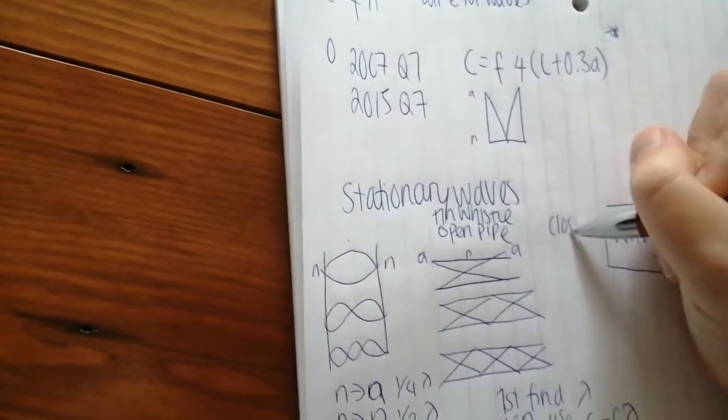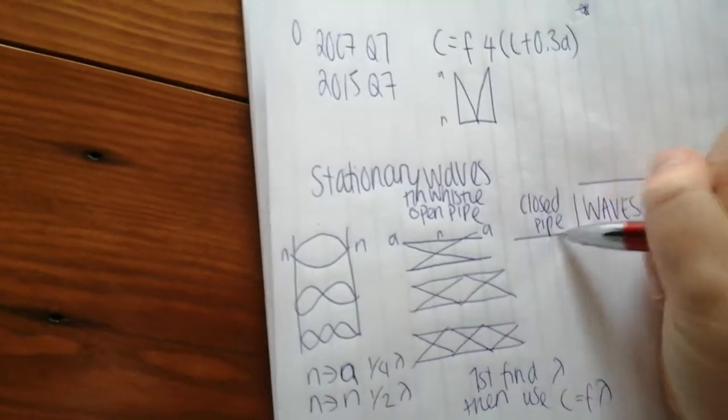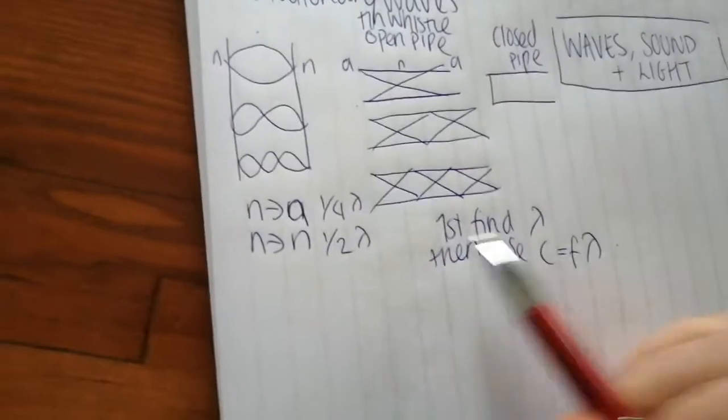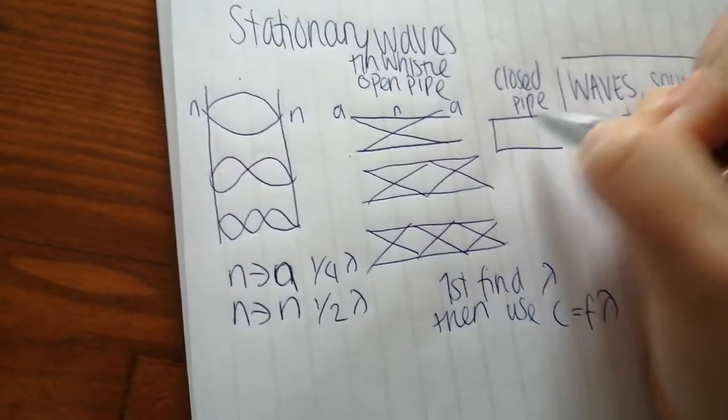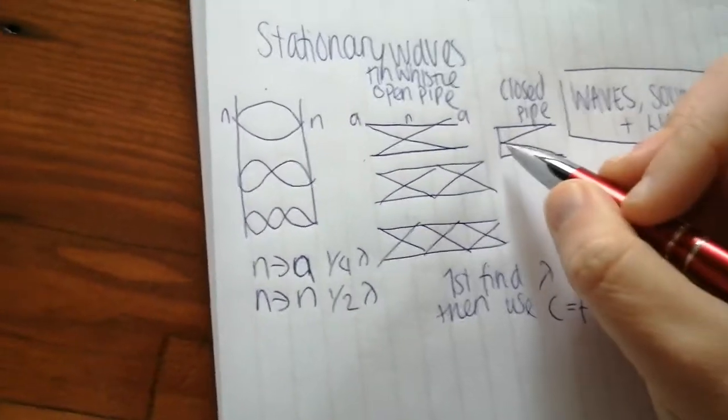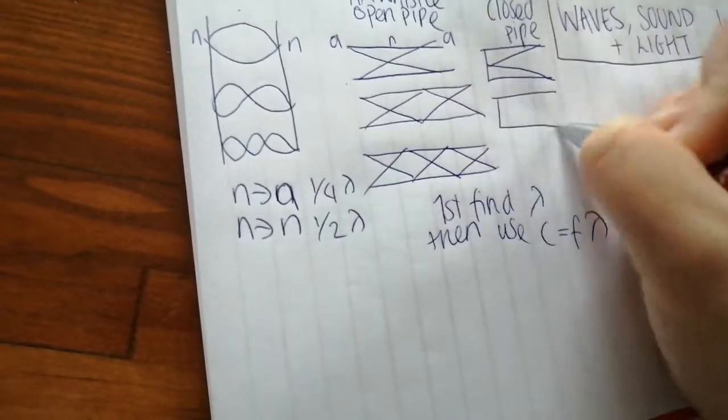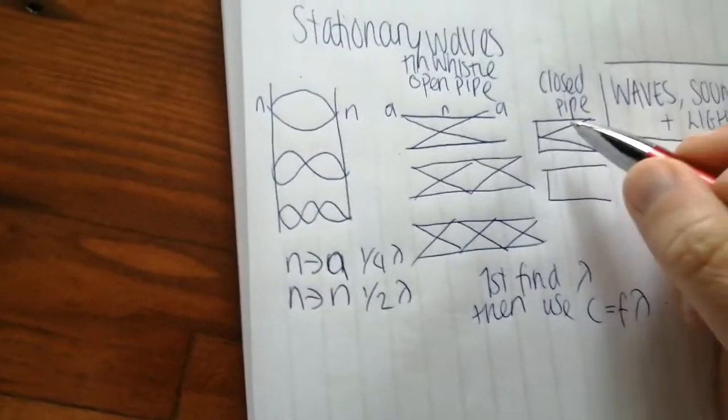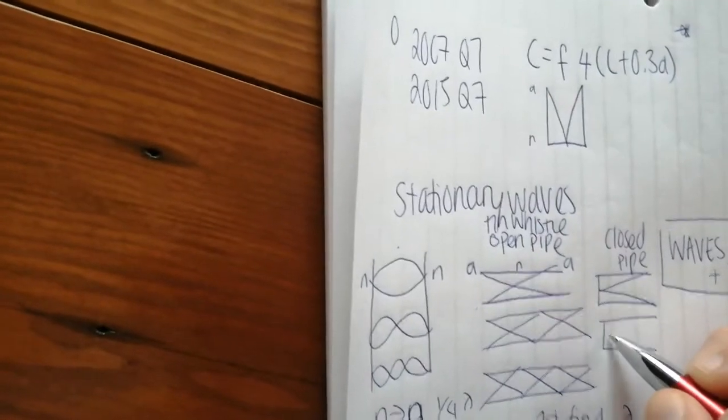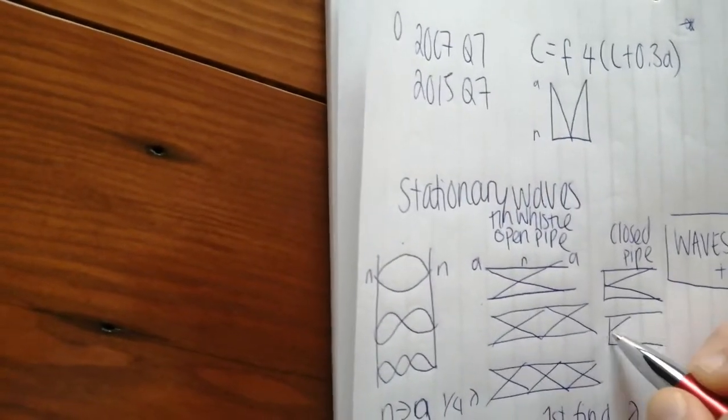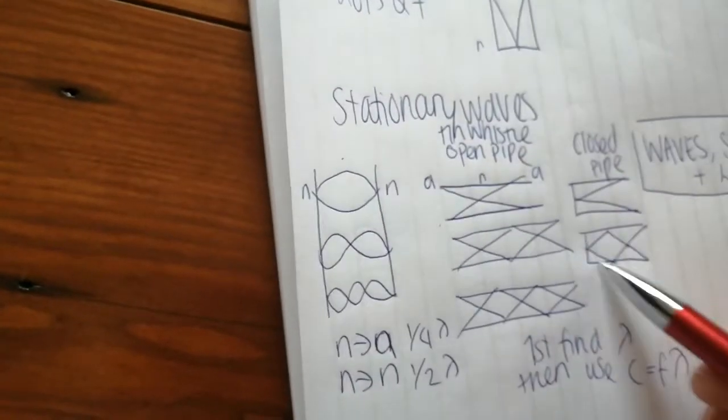If it's a closed pipe, fairly similar maths involved, but a closed pipe, it has an anti-node at the open end and a node at the closed end. So with drawing these, what you tend to draw is V's. So what we have here is one V. For this next one, it has to end with a V here.